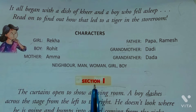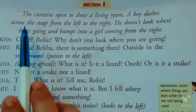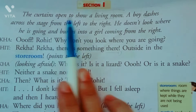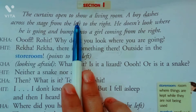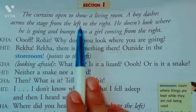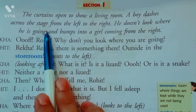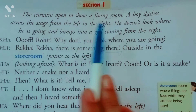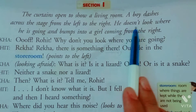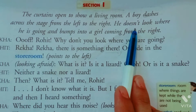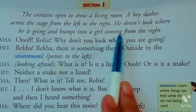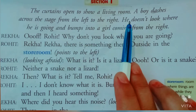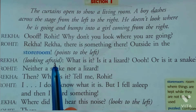Section 1 se study karna start karte hain. The curtains open to show a living room — curtains ka matlab hai pardhe, jo living room ko dikhane ke liye khulte hain. A boy dashes across the stage from left to right — ek ladka stage ke upar left se right jata hua dikhta hai. He does not look where he is going and bumps into a girl coming from the right.